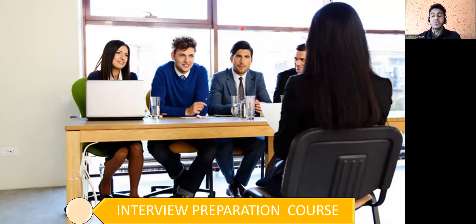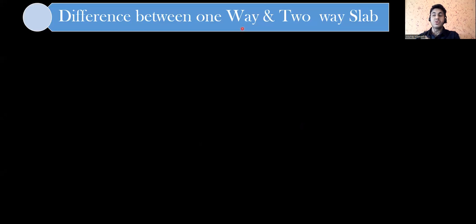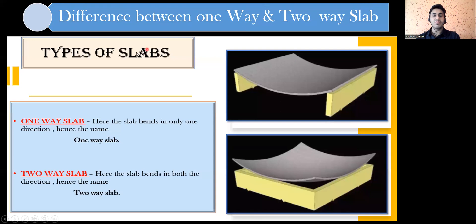Welcome back to the lecture. In this lecture we'll see a few more interview questions. One of the favorite questions an interviewer can ask a fresher is: what is the difference between a one-way slab and a two-way slab? We'll try to answer both. Coming to the types of slab, we have one-way slab and two-way slab. One-way means the slab is going to bend in only one direction; two-way means the slab is going to bend in two directions.